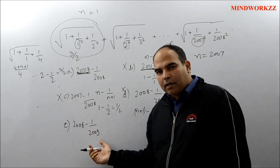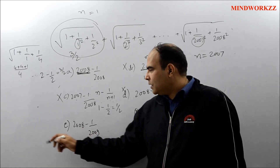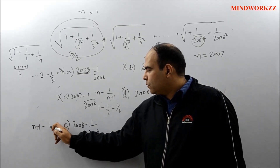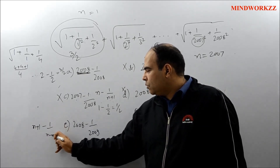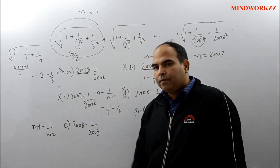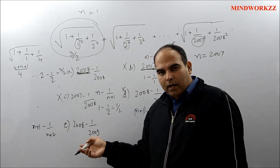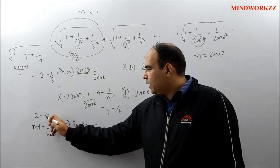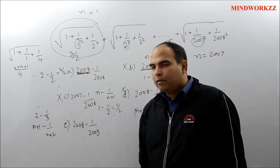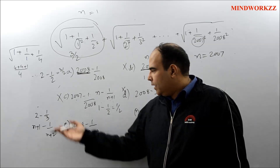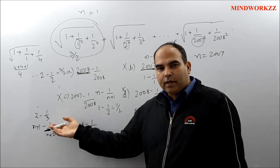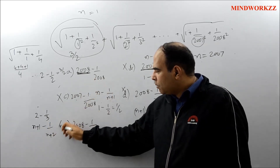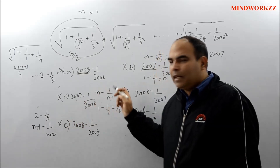Option E is 2008 − 1/2009, which for n = 2007 represents (n+1) − 1/(n+2). With n = 1 this becomes 2 − 1/3, which is obviously not equal to 3/2, so Option E is also rejected.